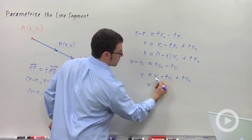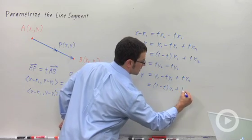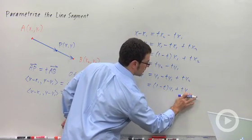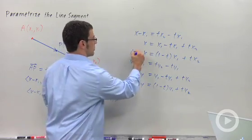So this is, after I factor the y1 out, I get 1 minus T y1 plus T y2 equals y. So these are my two equations right here.